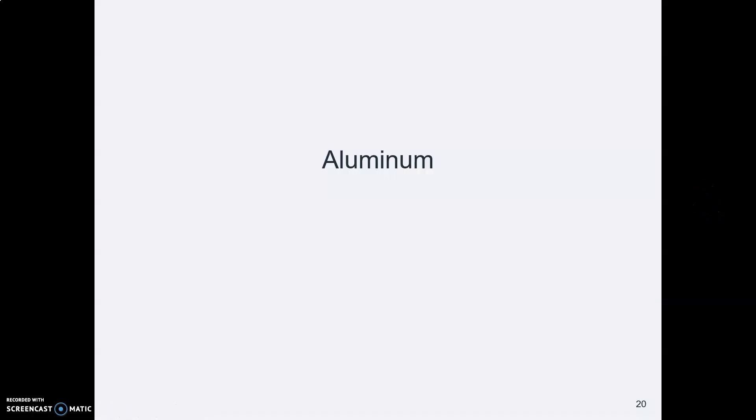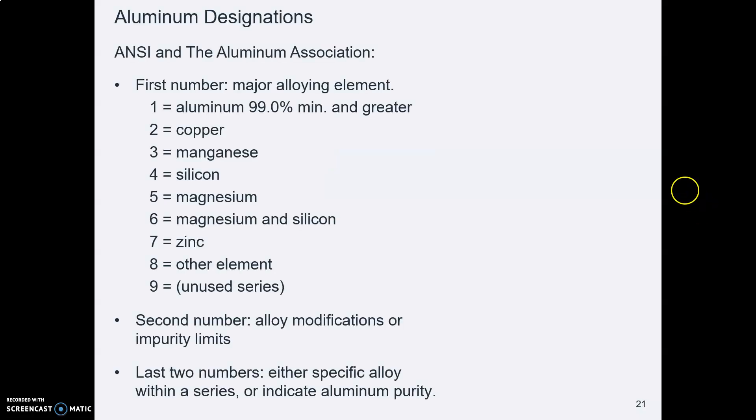Let's look at aluminum just a bit. Aluminum has its own numbering system, so it comes from the Aluminum Association, and then ANSI coordinates the numbering system. The first number is the major alloying element after aluminum. Of course, aluminum is an element. These other alloys make the type of aluminum.